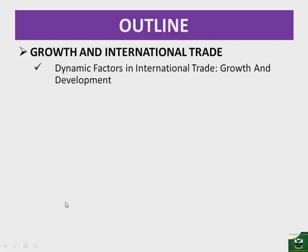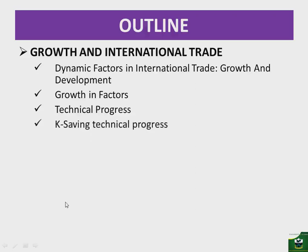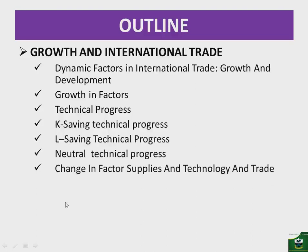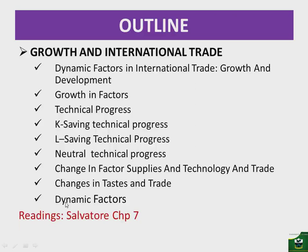We will look at growth and development, then growth in factors, as well as technical progress. Within technical progress we will cover capital-saving technical progress, labor-saving technical progress, and neutral technical progress. Then we will look at changes in factor supplies and technology and their effect on trade, and finally changes in tastes and trade. For further reading, you can find the content of this unit in Salvatore, chapter seven.